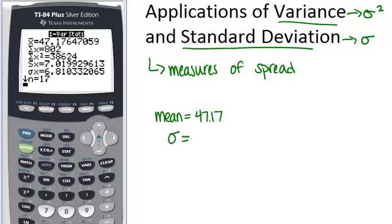So sigma, our standard deviation, is 6.81. This means about 68% of the data was within 6.81 points of the mean of 47.17. So 68% of the data was between approximately 40 and 54. Standard deviation helps tell you how many data points were within a certain amount of the mean.